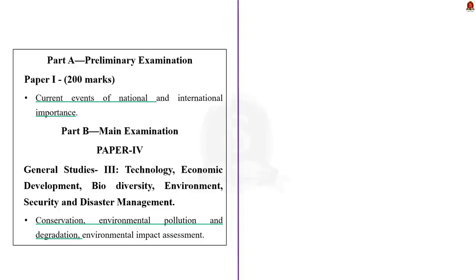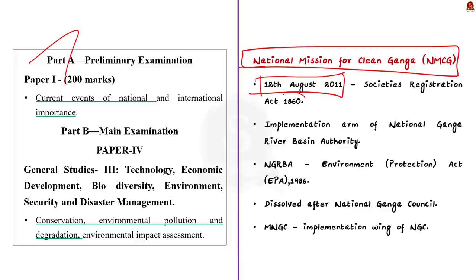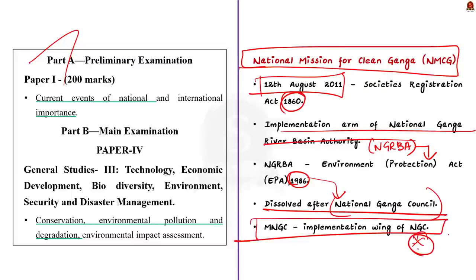Let us focus on the National Mission for Clean Ganga (NMCG) in detail. NMCG was registered as a society on 12th August 2011 under the Societies Registration Act 1860, and acted as the implementation arm of the National Ganga River Basin Authority (NGRBA), constituted under the Environment Protection Act (EPA) 1986. The NGRBA was later dissolved after the constitution of the National Council for Rejuvenation, Protection and Management of River Ganga — the National Ganga Council — making NMCG the implementation wing of this council.